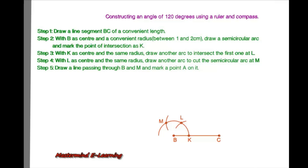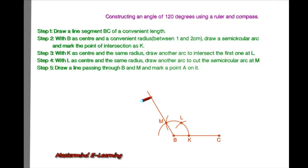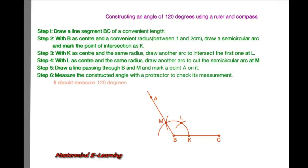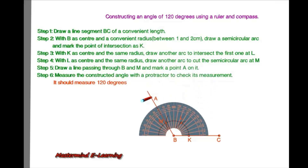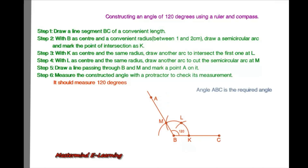Draw a line passing through B and M and mark a point A on it. Our angle is ready. Measure the constructed angle with the protractor to check its measurement — it should measure 120 degrees. Angle ABC is the required angle.